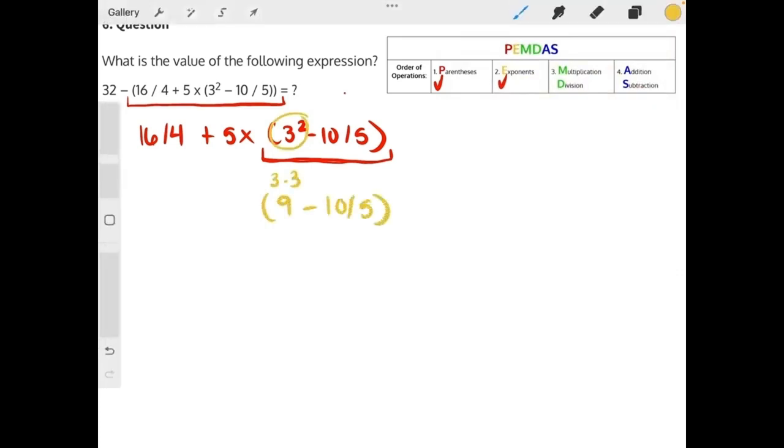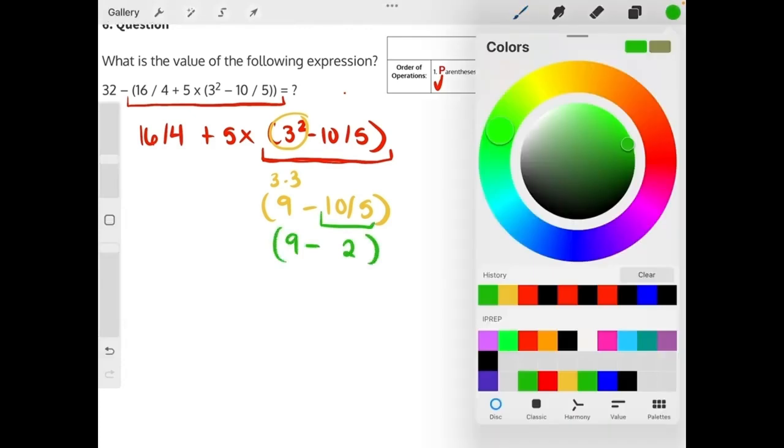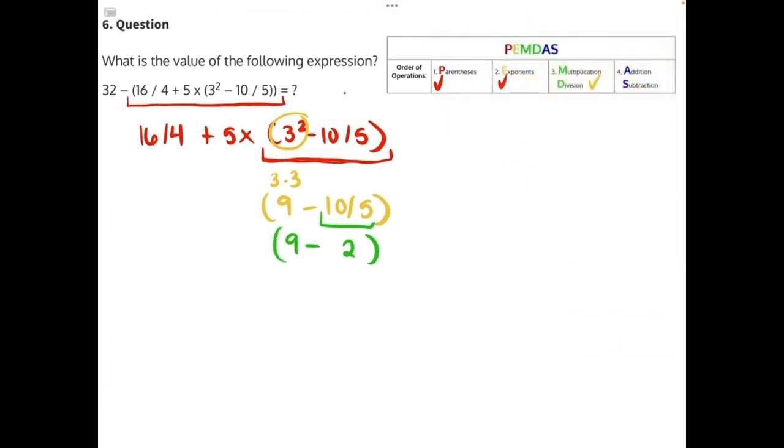To finish out those parentheses, we need to move to the next step, which is multiplication and division. 10 divided by 5 will give us 2. 9 minus 2. And then finally, we need to do addition and subtraction. 9 minus 2 will give us 7.